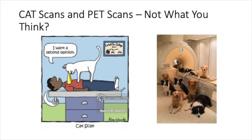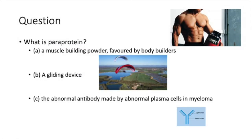Another question: what is a paraprotein? Is it A, a muscle-building powder favoured by bodybuilders; B, a gliding device; or C, the abnormal antibody made by abnormal plasma cells in myeloma? The answer is C. I can tell you A is more applicable to me — there may be a six-pack concealed underneath here — but I don't use paraprotein powder. Actually, don't use a lot of protein powder. It's not good for your kidneys.